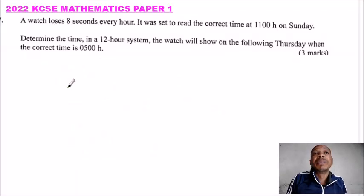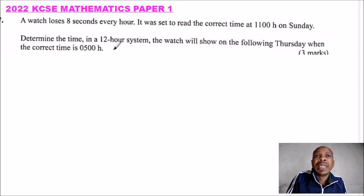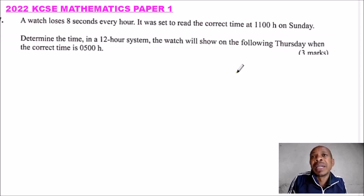2022 KCSE Mathematics Paper One, Question Seven. A watch loses eight seconds every hour. It was set to read the correct time at 11:00 on Sunday. Determine the time in a 12-hour system that the watch will show on the following Thursday when the correct time is 05:00 hours.